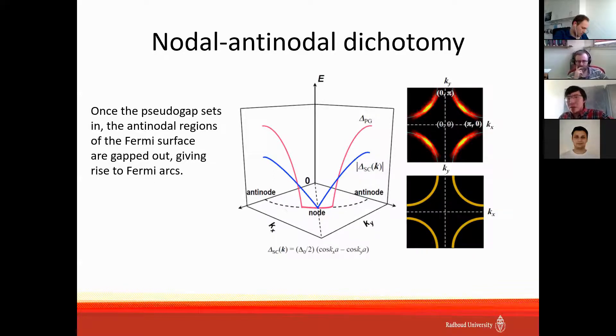Our work is devoted to nodal-antinodal dichotomy. Here in the picture, it is shown that large Fermi surfaces predicted by band theory are observed by ARPES for cuprates. But once the pseudo-gap sets in, the antinodal regions of the Fermi surface are gapped out. We see that these regions are suppressed.